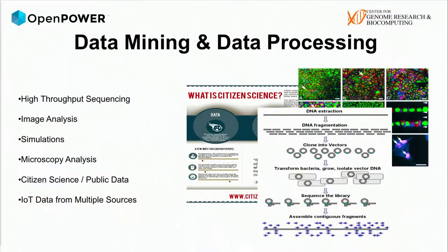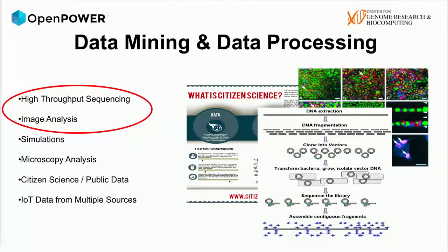We focus a lot on data mining and data processing, and a lot of this comes through initially high throughput sequencing and image analysis. This is why we're so deeply involved with groups like Illumina, who create some of this sequencing technology, and NVIDIA. NVIDIA heavily backs us for all of our image stuff, so we are massively processing image data constantly. We have groups that just take pictures of herds of animals going through the forests.